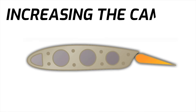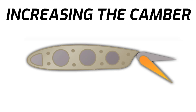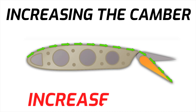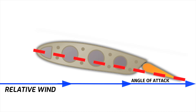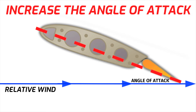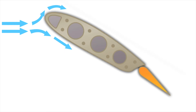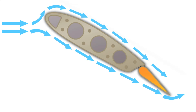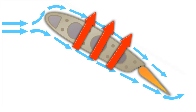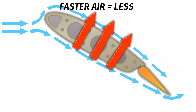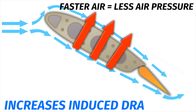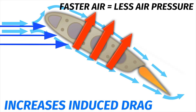One way we can increase the camber on our wings is by lowering the flaps. This lengthens the upper surface of the wing, which creates more lift, but also increases drag. Another way to increase lift is to increase the angle of attack — raising the nose so the relative wind has to travel a farther distance around the upper surface of the wing. Lift is increased because that wind on top travels farther, just like when we increase camber. But increasing angle of attack also increases induced drag, because we're exposing a bigger portion of the wing to the relative wind.